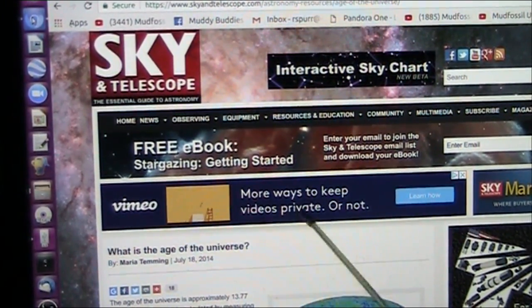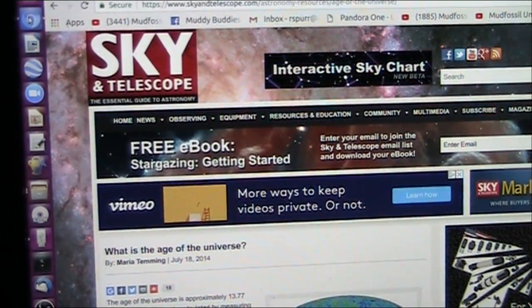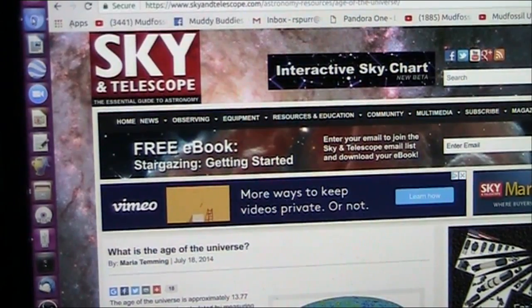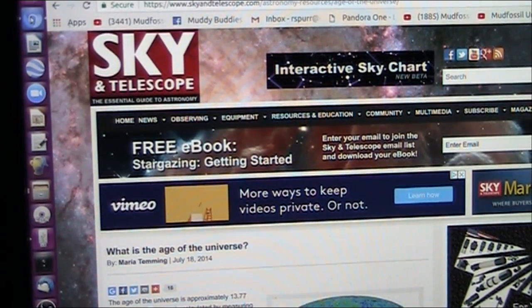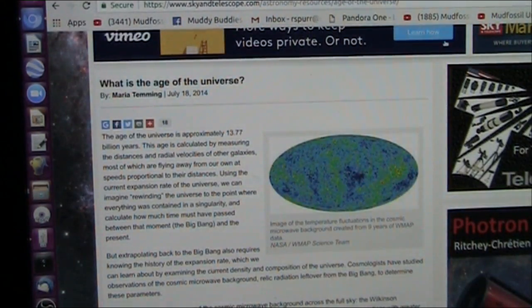Here we're looking at a site called www.skyandtelescope.com, and they are talking about what is the age of the universe. This is 13.77 billion years. Well, how did they come up with that? Guess how they come up with everything? I can tell you how they come up with it. The speed of light. Einstein. Which is totally bogus. Absolutely nonsense.